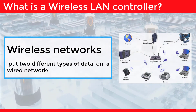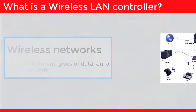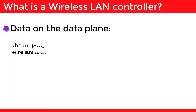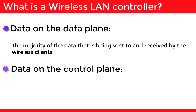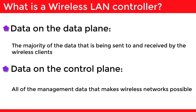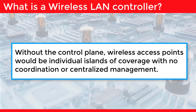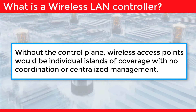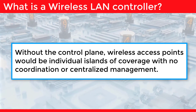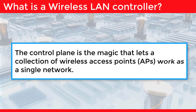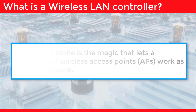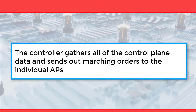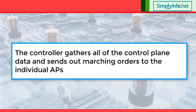Wireless networks put two different types of data on a wired network. Data on the data plane is the majority of the data being sent to and received by wireless clients. Data on the control plane is all of the management data that makes wireless networks possible. Without the control plane, wireless access points would be individual islands of coverage with no coordination or centralized management. The control plane is what lets a collection of wireless access points work as a single network.